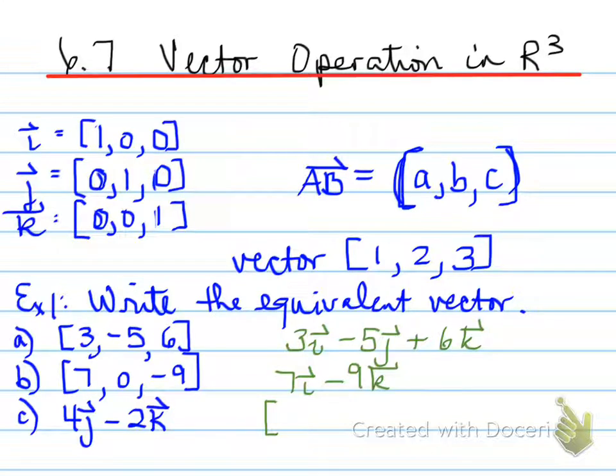And the last one, we can rewrite it in component form as 0, 4, and -2. Alright, next.